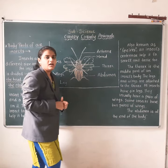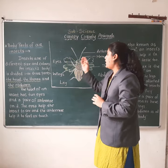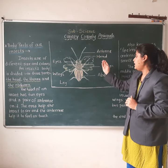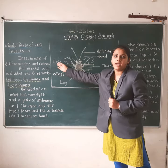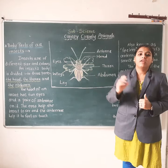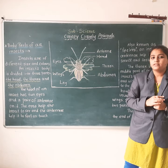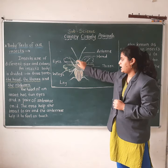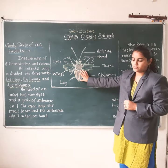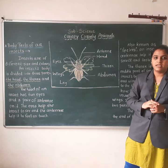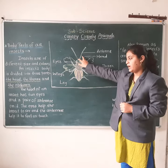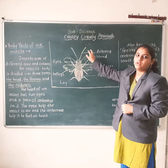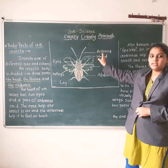Now let's take a revision. The body parts of an insect are: antennae, head, thorax, abdomen, legs, wings, and eyes. The three main body parts of an insect are the head, thorax, and abdomen. The head has two eyes and a pair of antennae — the eyes help the insect see, and the antennae help it feel or touch. The antennae are also known as feelers.